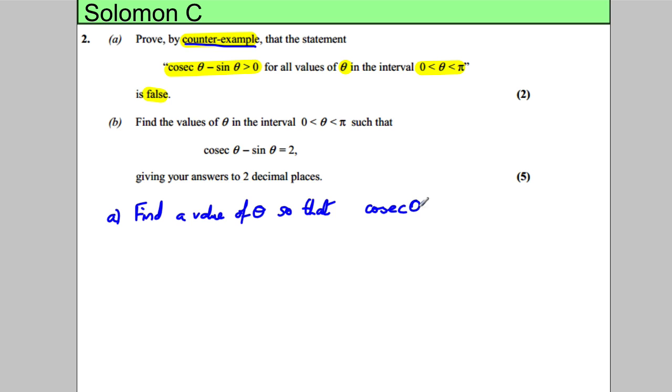If we could find a theta that makes that less than zero or makes it equal to zero, then we've shown that this thing can't be strictly bigger than zero for all values. So that's our aim.